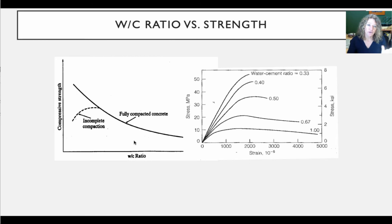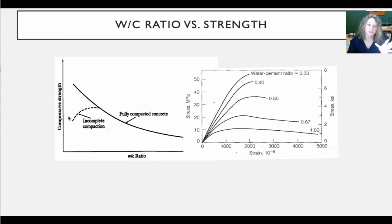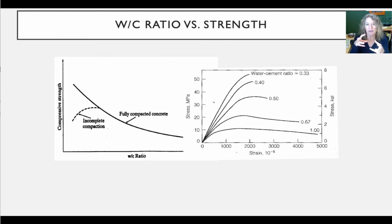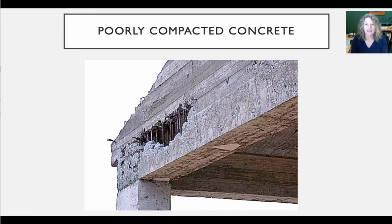The plot also shows us that as the water-cement ratio increases, strength decreases. But when we get to a certain point, we notice the incomplete compaction curve. What that's saying is when the concrete gets too dry, it becomes non-workable — you can't get it in around the rebar and past the formwork.